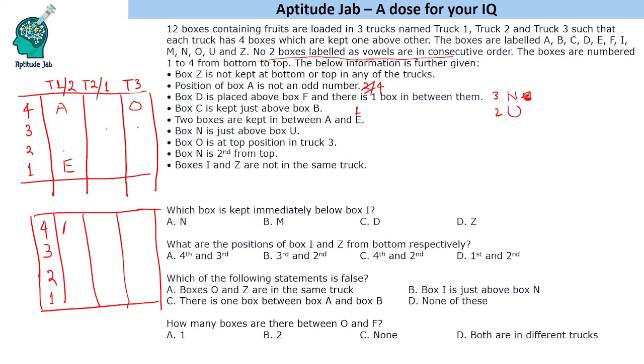N is at second position from top and U is at this position. So let us make two possible cases. This is A, this is E, this is O. So in one case we can put N U here and in another case we can put N U here.